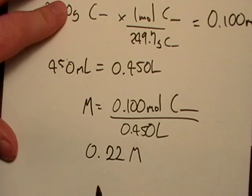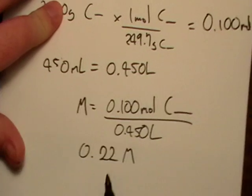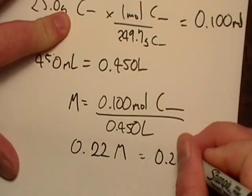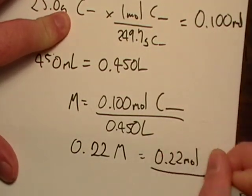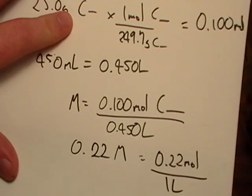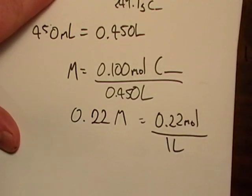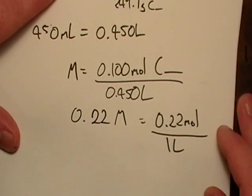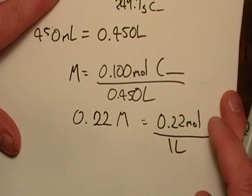Okay, so our concentration is 0.22 M, which just means there's 0.22 moles per one liter. So it's fairly dilute, if you ask me. That doesn't seem like a whole lot.